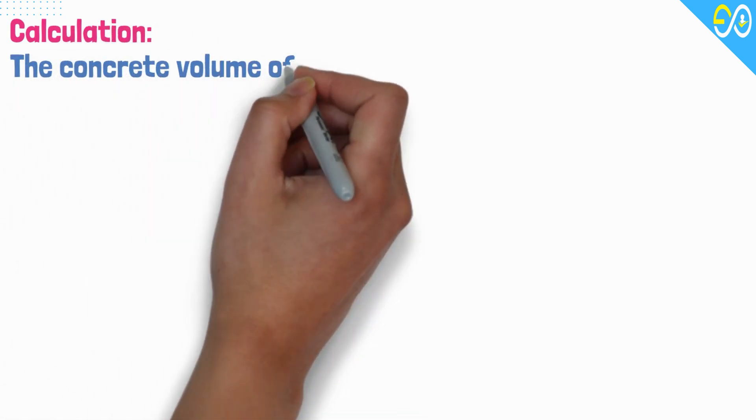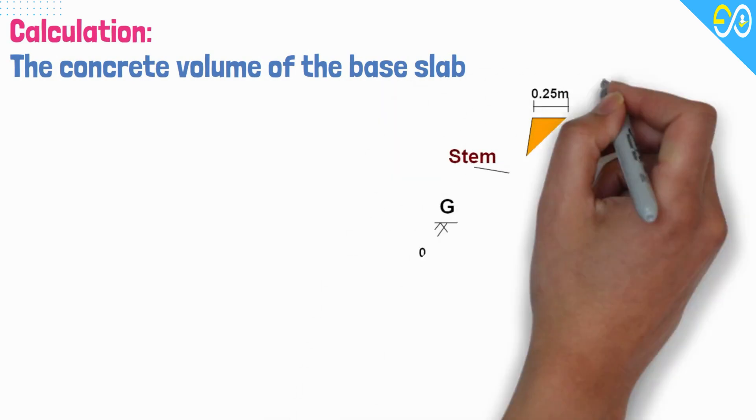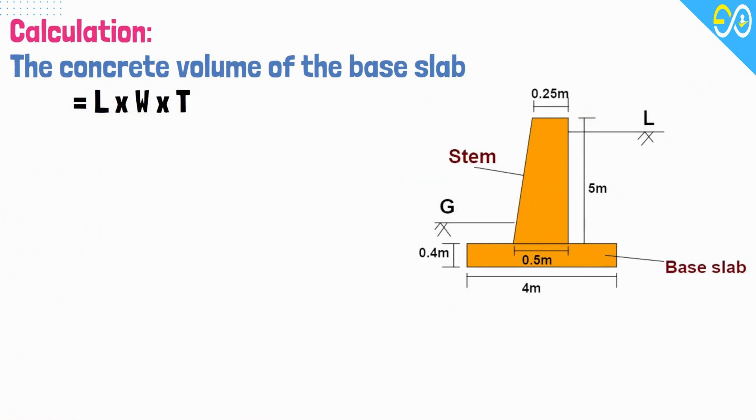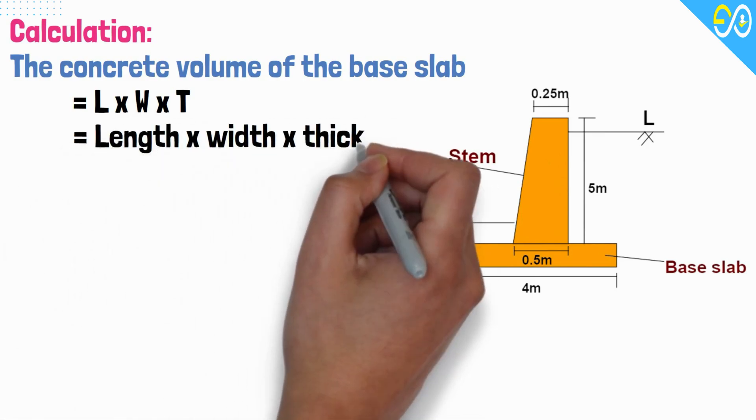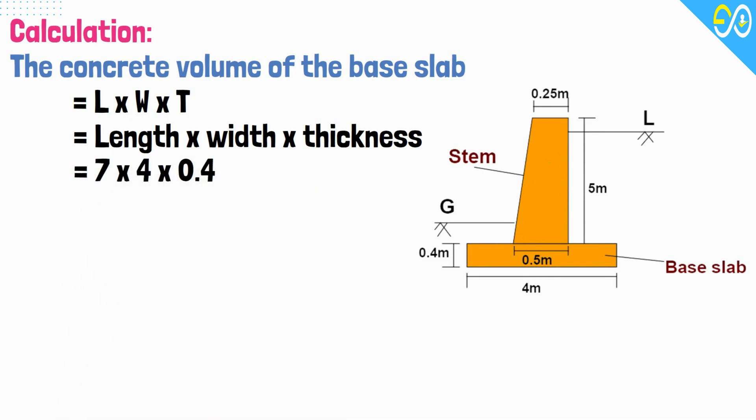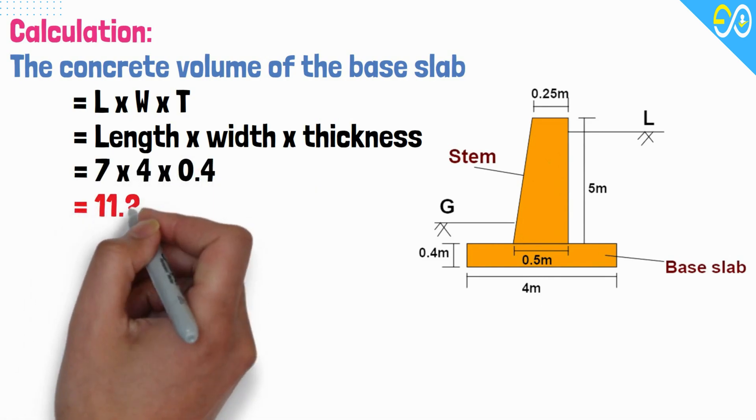The concrete volume of the base slab equals L times W times T, equals length times width times thickness equals 7 times 4 times 0.4 equals 11.20 cubic meters.